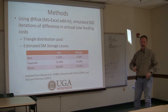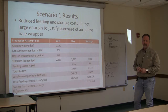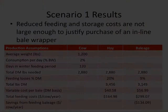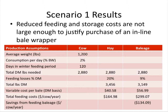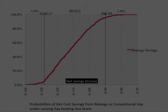In this first scenario, it's going to be very difficult to justify spending money on baleage just on the basis of storage losses. For a 1,200-pound cow at 2% body weight fed 128 days, she needs about 3,000 pounds of dry matter. When you adjust for feeding losses and account for the value of bales — comparing bermudagrass hay versus bermudagrass baleage — it looked like a loss of about $135 per cow per year just from putting up baleage.